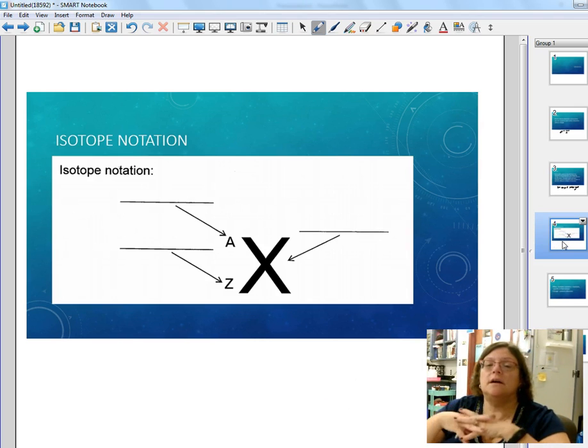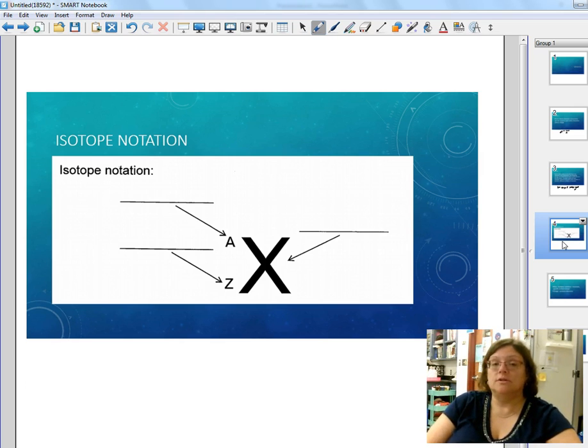Now this is isotope notation, or the notation for a single atom, not for an element but just for when we're talking about one particular atom. When we write it out like this, this is the atomic symbol or the chemical symbol.